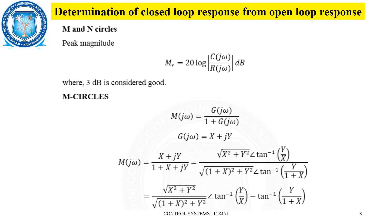Let us take G(jω) = X + jY. Substituting this, we get M(jω) = (X + jY) / (1 + X + jY). For a complex term with real and imaginary parts, the magnitude is the square root of the sum of squares of the real and imaginary parts, and the angle is the tan inverse of the imaginary part divided by the real part.